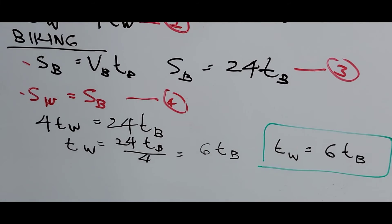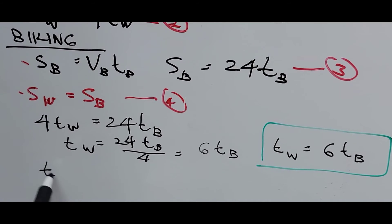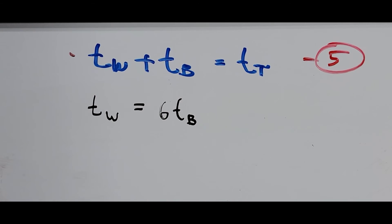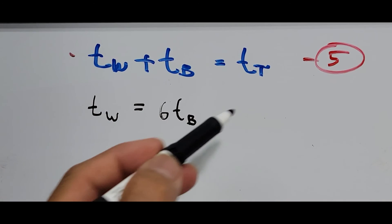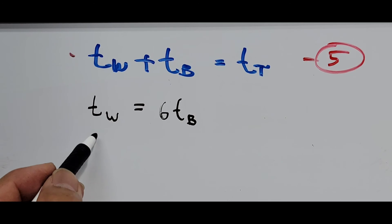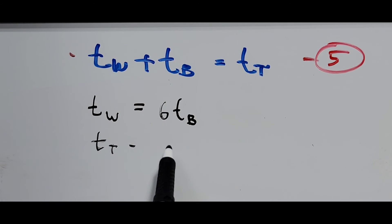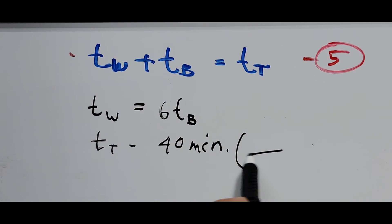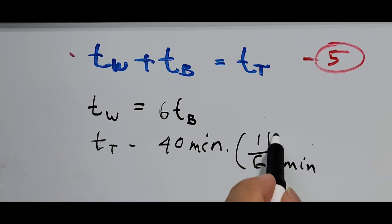Considering the whole trip: time walking plus time biking equals total time — that is equation 5. The total time given is 40 minutes. We need to convert that to hours since our speed is in miles per hour. Dividing by 60 minutes per hour: 40 divided by 60 simplifies to 2/3 of an hour.